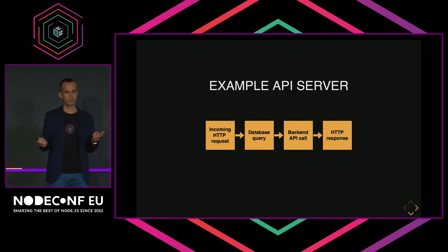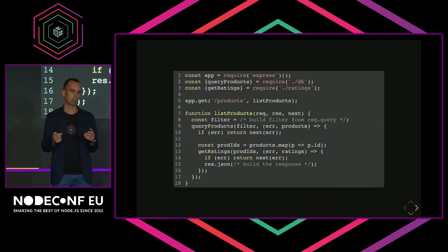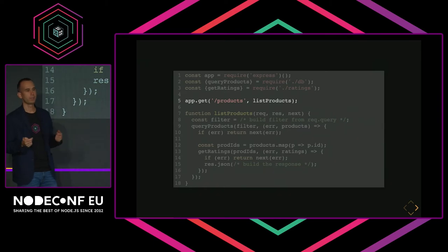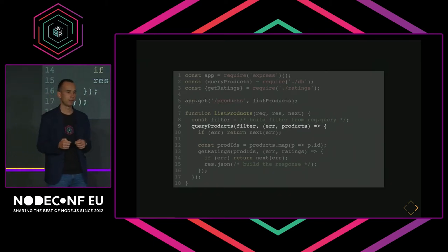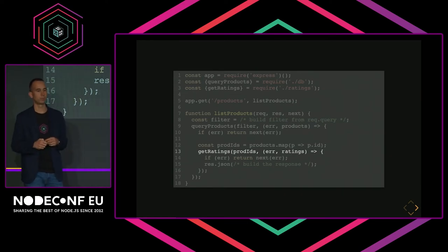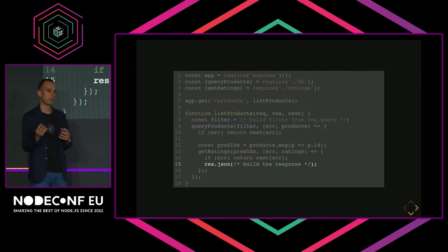If I was writing this in 2013 using Express, I would write a route — GET products — and in the implementation, I can call my database to get some data, then call my backend services to get some more data, and then finally build a response. And even in a short piece of code like this, there is a lot of context hidden under the hood.